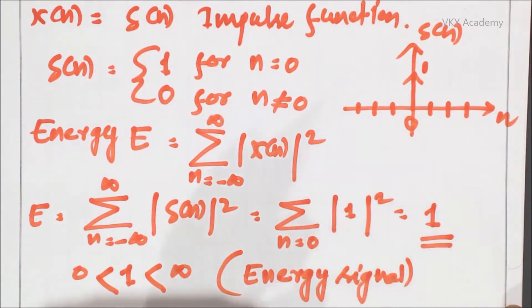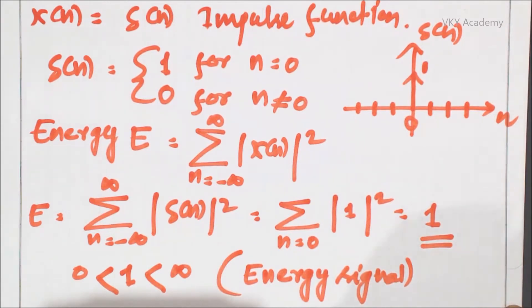We have also discussed that for an energy signal the average power is always equal to 0. So let us find out the average power and check whether it is equal to 0 for the unit impulse function or not.